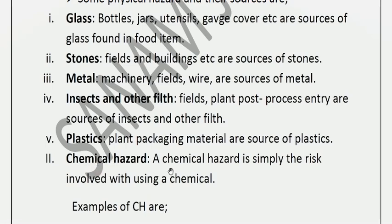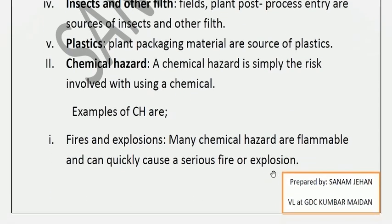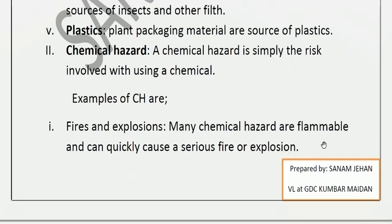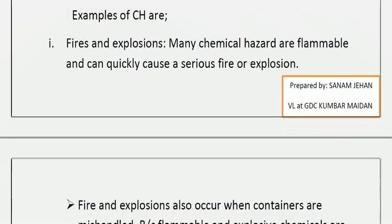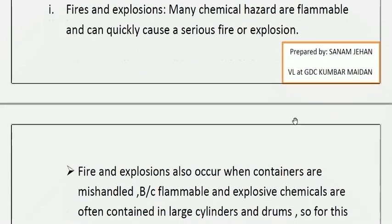Chemical hazards are simply a source of chemicals that can pose dangers. A key example of a chemical hazard is fire and explosions, as many chemicals are flammable. Serious fires or explosions can result, and some chemical hazards are very strong. Gas cylinders can also explode as a chemical hazard.